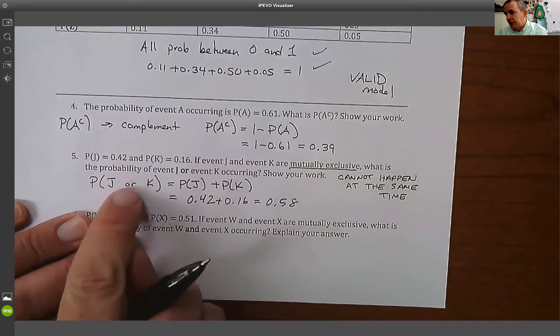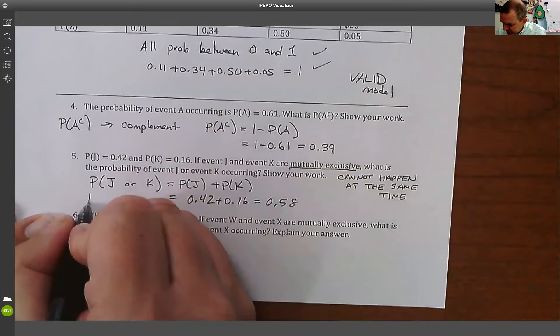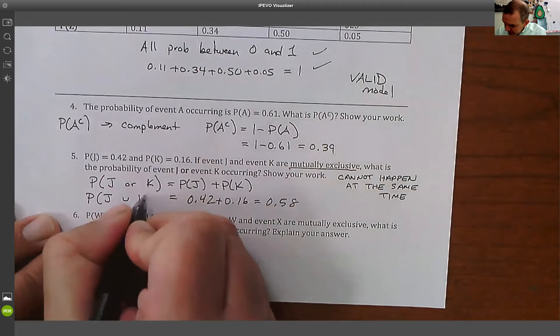So again, because they're mutually exclusive, we use the 'or' symbol. Or you could see it this way: J union K. That's going to be allowed to add it.